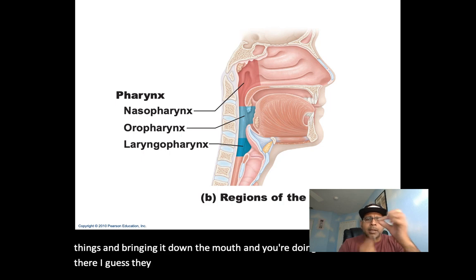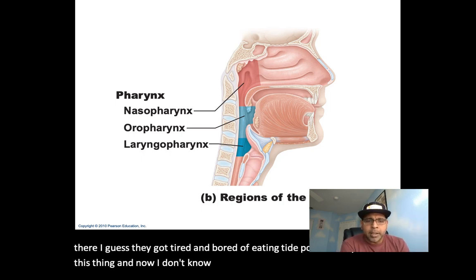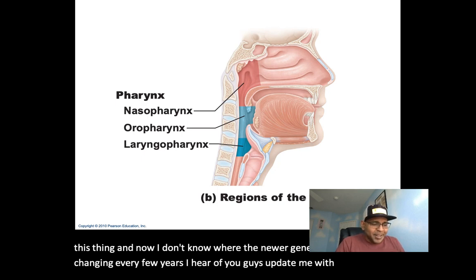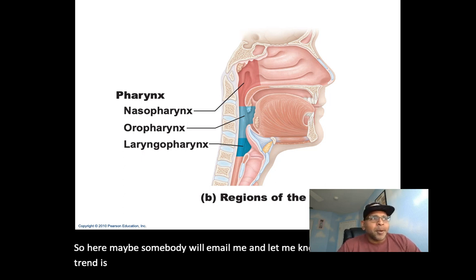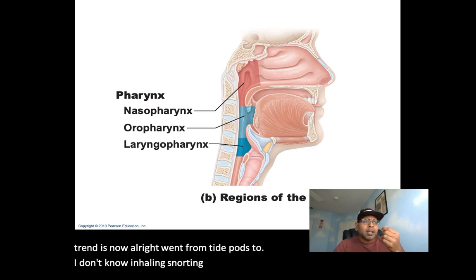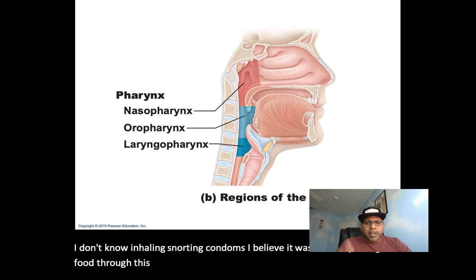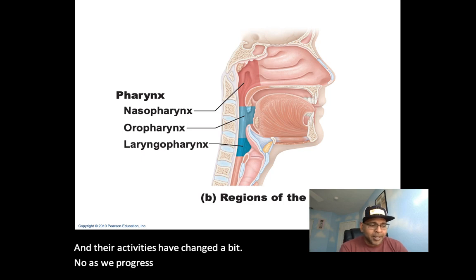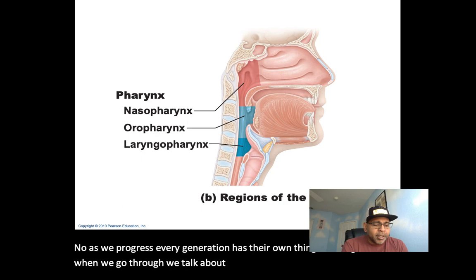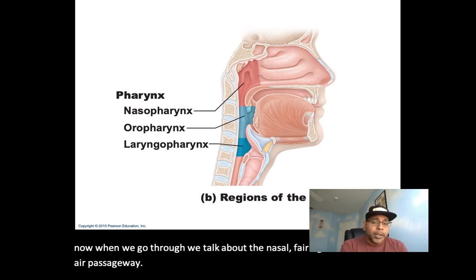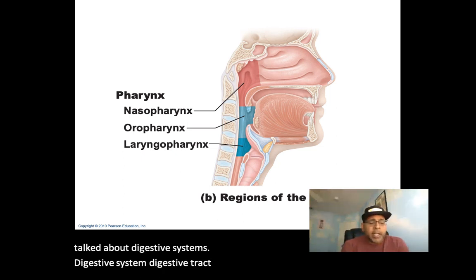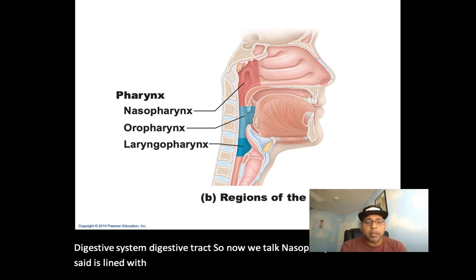The nasal pharynx is lined with pseudostratified ciliated epithelium. Located inside are the pharyngeal tonsils — when infected these are known as your adenoids. They are located high up on the posterior wall and help trap and destroy pathogens entering the nasal pharynx.